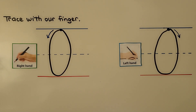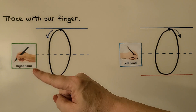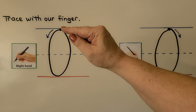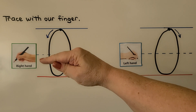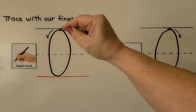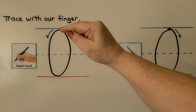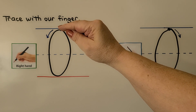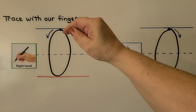We can trace with our finger for right-handed students who write like this. We start at the top. We go around away from our hand, then we pull it towards our hand back up to the top. Let's try it again. We start up here, we go around away from our hand, then back towards our hand and back up to the top.